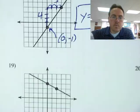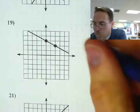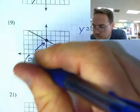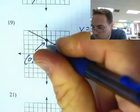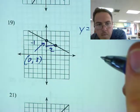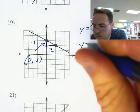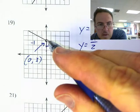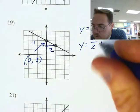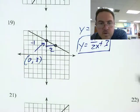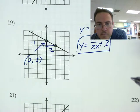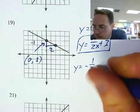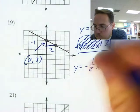Number 19. y equals mx plus b is our format. The y-intercept is at (0, 3). The slope goes down 1 and over 2. So y equals negative 1 half x plus 3.